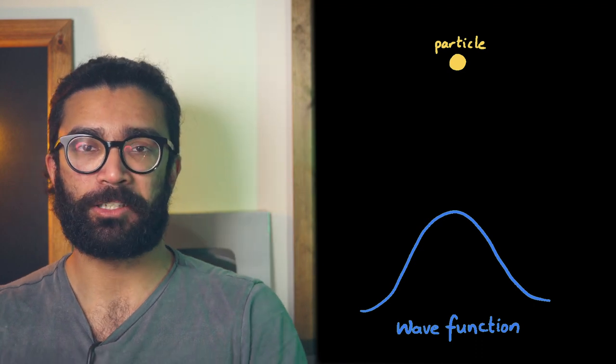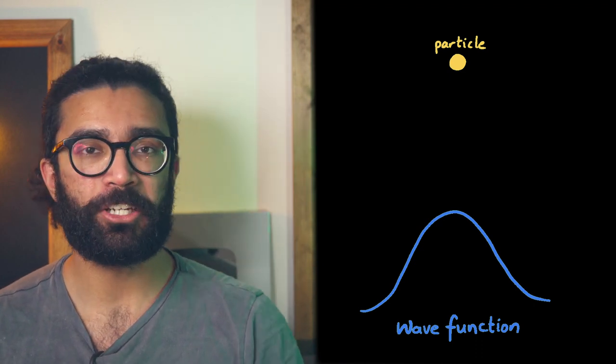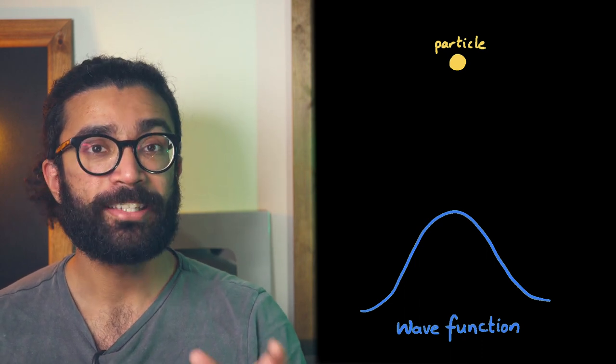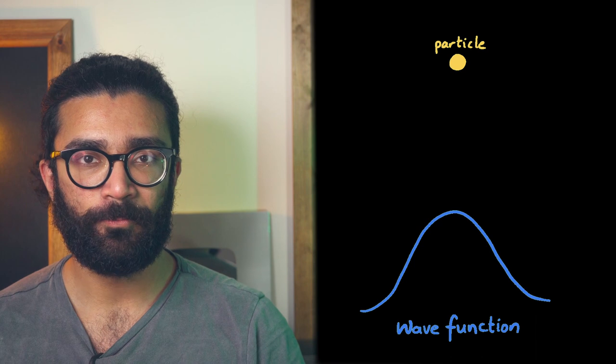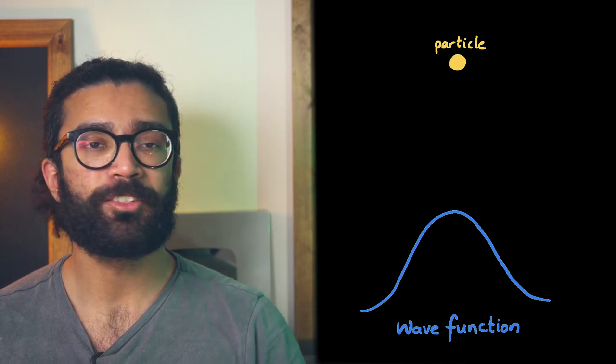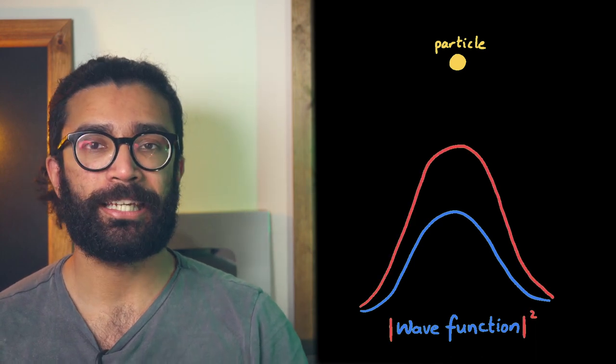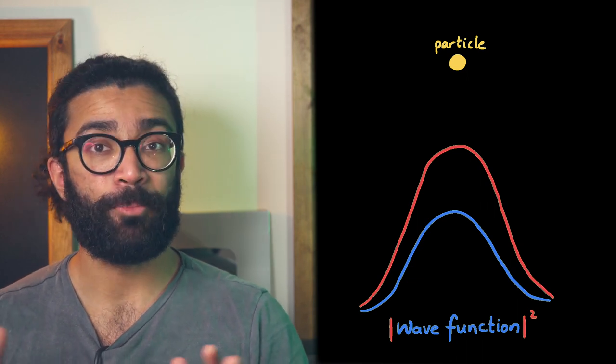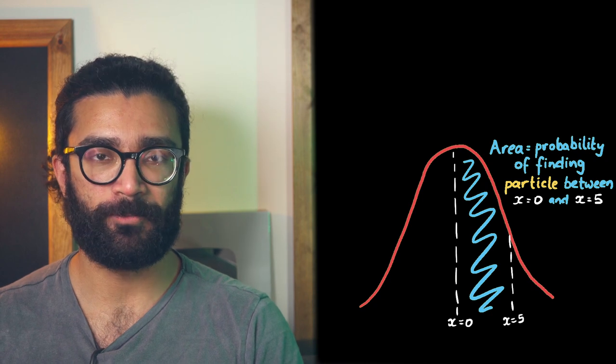This is basically a mathematical function that has all the information we can know about the system. For example we can take the wave function of our system, our particle, and we can square it. Well, technically we're taking its square modulus. Then we can work out a part of the area under this square modulus function.